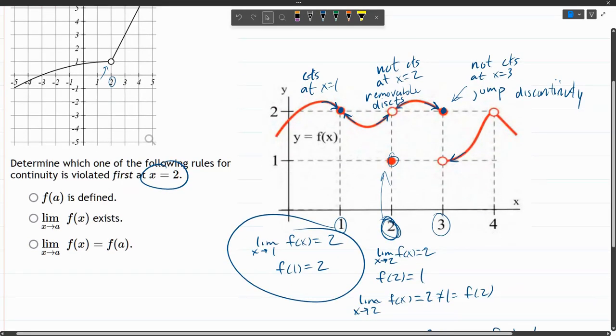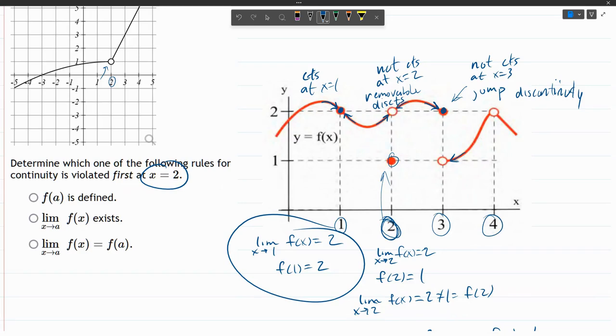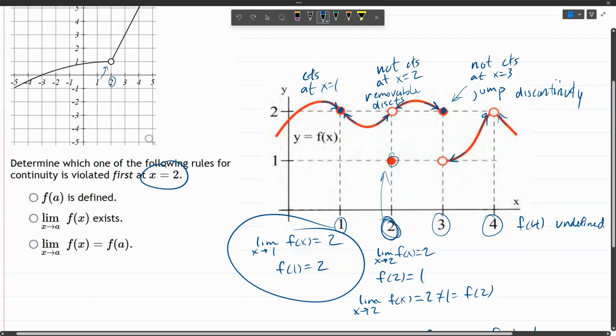But at four, the limit exists on both sides. No problem, it's approaching two. However, f of four is undefined. There's not some filled in point down here. There is no point at x equals four. So because f of four is undefined, it's going to be discontinuous. I believe that's called removable. That would not be a jump discontinuity because they have the same y value.